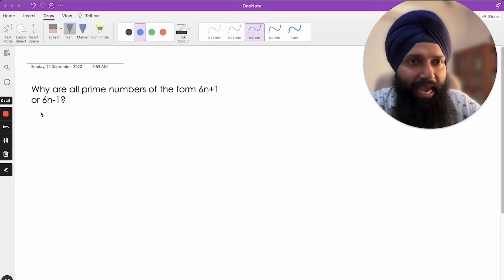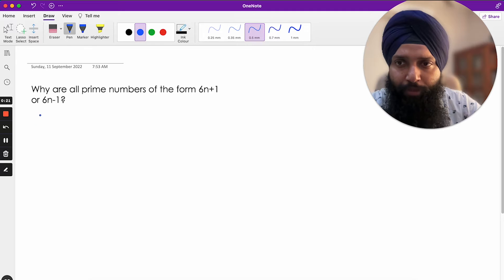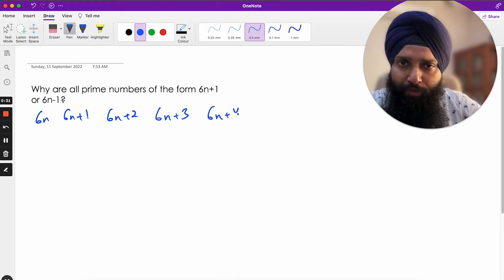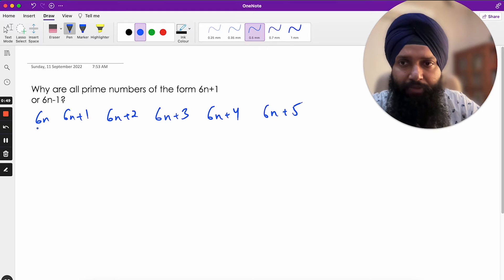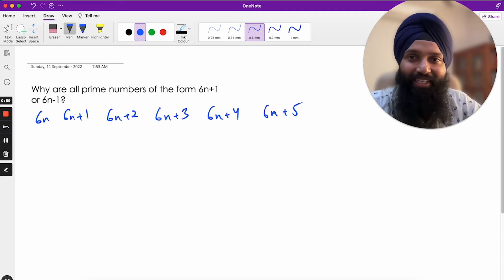If you think about it, every number, every possible number, not just prime numbers, has to be of the form 6n, 6n+1, 6n+2, 6n+3, 6n+4, or 6n+5. Every single number has to be one of these six forms. There can be no number which is not of any of these forms, because if you pick any number when it's divided by 6, it has to leave a remainder of 0 or 1 or 2 or 3 or 4 or 5. There's no possibility it cannot leave a remainder of 6 because we are dividing by 6.